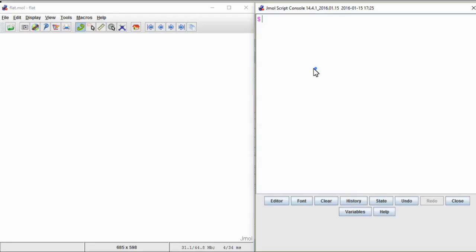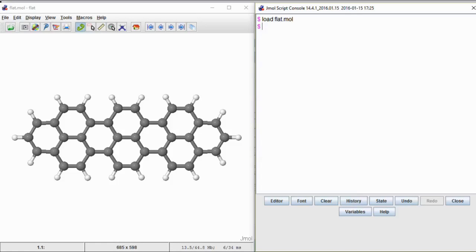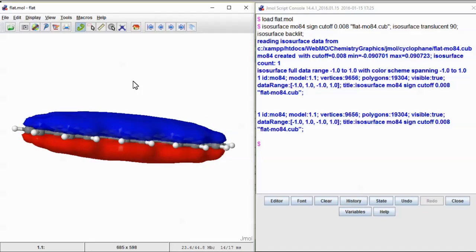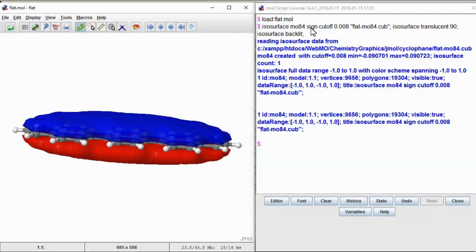Now, in Jmol, load the molecule. Create the MO surface with an isosurface command. The surface name, MO84, the sine parameter tells Jmol to create both the plus and minus lobes of the MO. Cut-off gives the electron density at the surface in electrons per cubic angstrom.